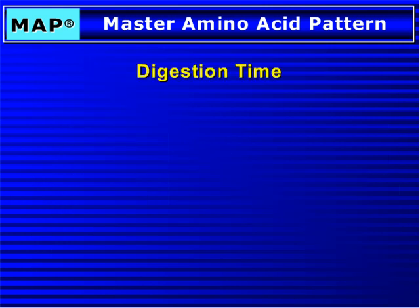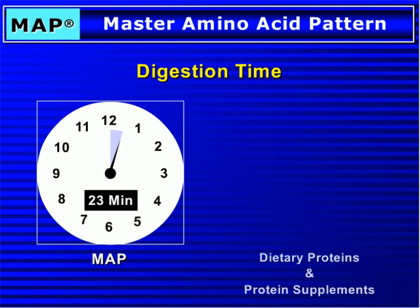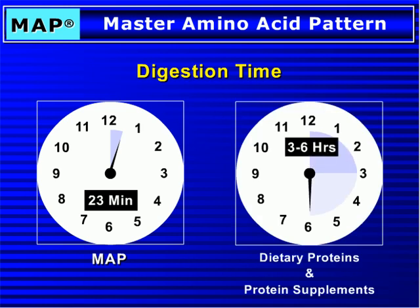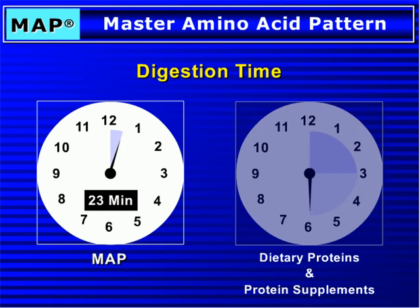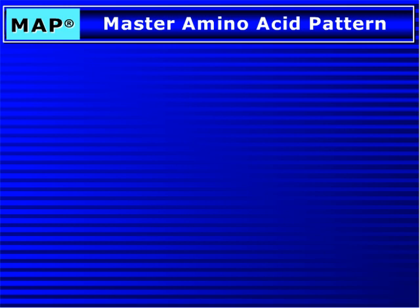Digestion Time. MAP is absorbed in the small intestine within 23 minutes from its ingestion. By comparison, dietary proteins and protein supplements need from 3 to 6 hours to be digested. This is 6 to 12 times longer compared to MAP.